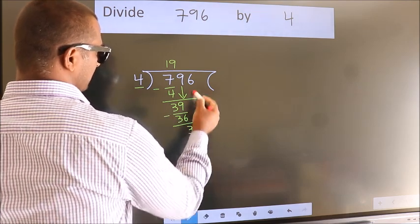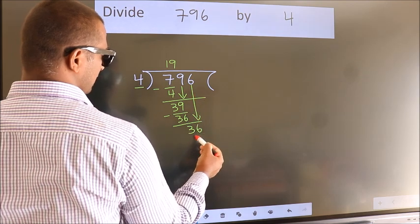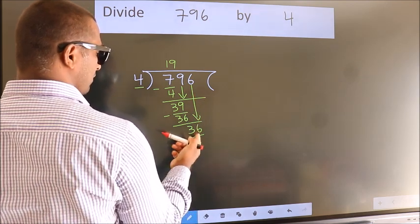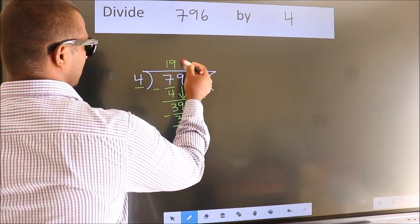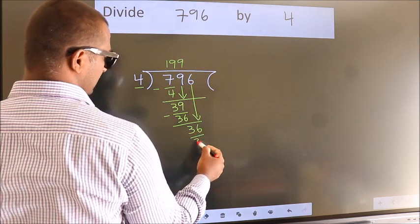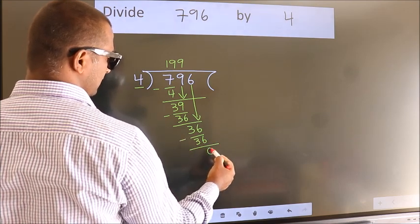After this, bring down the beside number. So 6 down. So 36. When do we get 36 in the 4 table? 4 nines, 36. Now we subtract. We get 0.